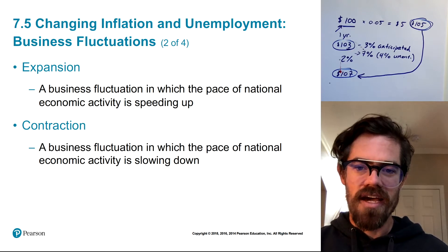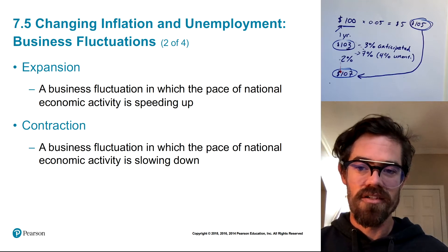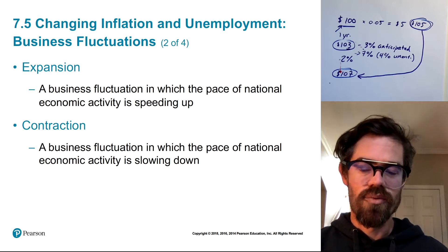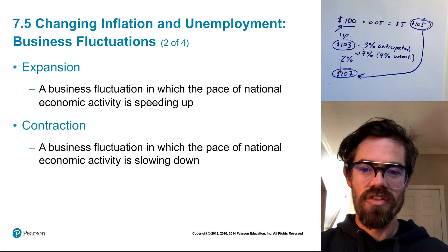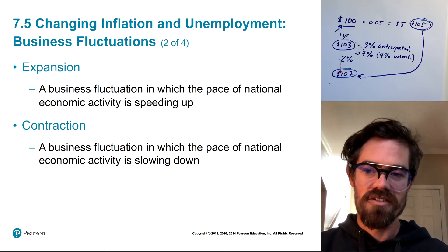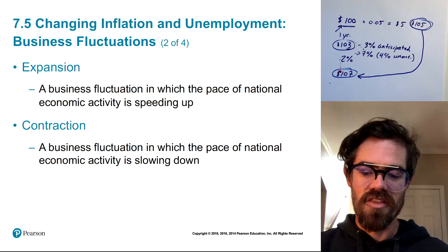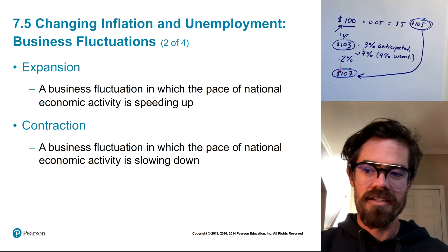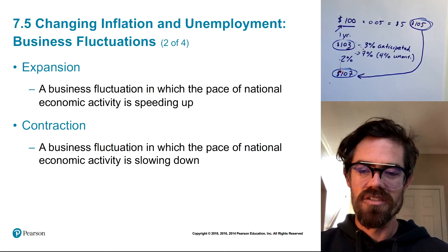The opposite of that is a contraction — this is when the pace of economic activity is slowing down. That's basically what we're experiencing right now with the quarantine environment with the coronavirus. Economic activity is slowing down; businesses have been forced to shut down if they are non-essential, like bars and restaurants. So right now we are currently in a contractionary period in the business cycle.